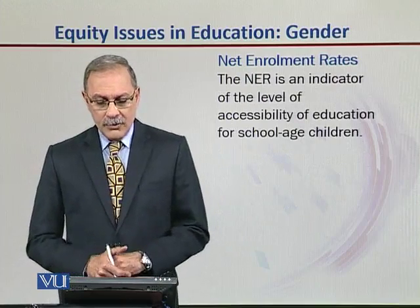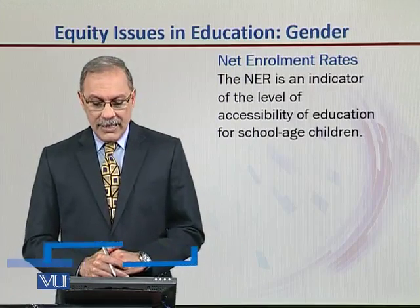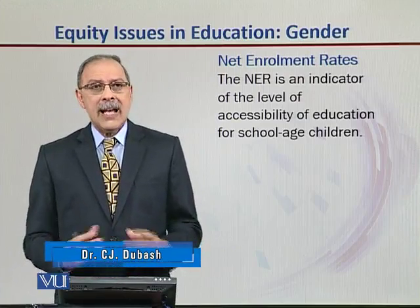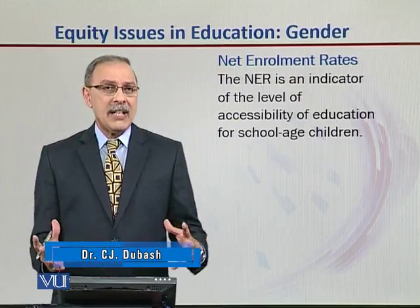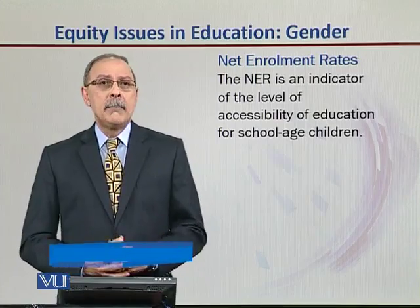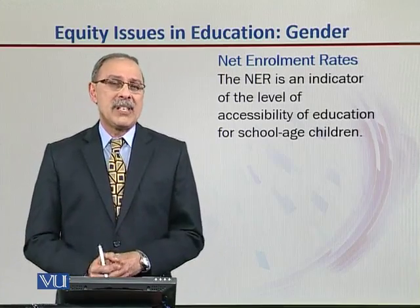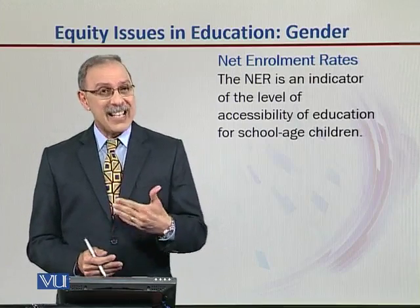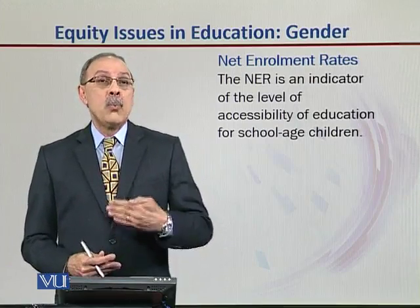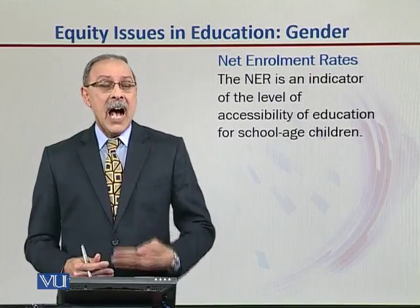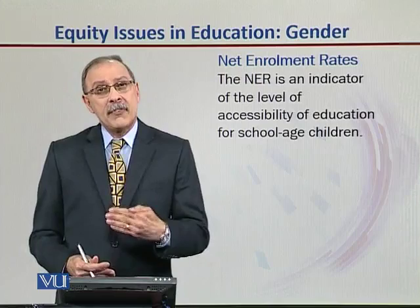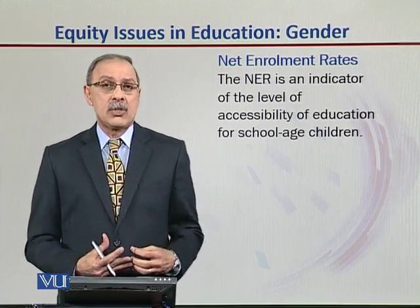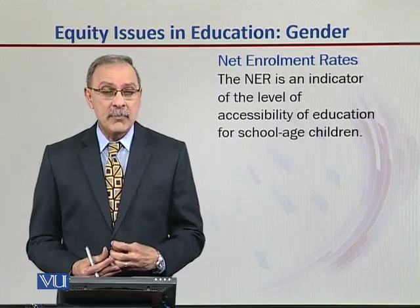The net enrollment rate is an indicator of the level of accessibility of education for school-age children. We might say 100% of students should be in schools, but only, let's say, 42% are in schools. Why are the other 58% not there? It's accessibility of schools — where are the schools located, how far are they, what kind of infrastructure arrangements do we have, how do we get these students to schools, and how do we keep them in schools?